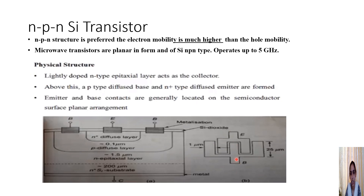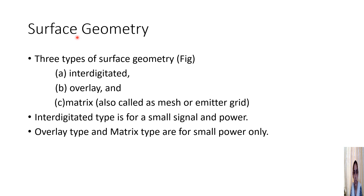This general planar arrangement is shown in both the cross-sectional and top views of the silicon NPN microwave transistor. There are three types of surface geometry: interdigitated, overlay, and matrix. The matrix can also be called mesh or emitter grid. The interdigitated type is used for small signal and power, whereas overlay and matrix types are used for small power only.